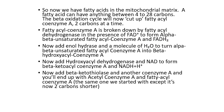Next we add enol hydrase and a molecule of water to our alpha-beta unsaturated fatty acyl coenzyme A, and we turn it into beta hydroxy acyl coenzyme A. Then we add hydroxy acyl dehydrogenase - again a dehydrogenase, so we're harvesting hydrogens from our beta hydroxy acyl coenzyme A. Our coenzyme in this case is NAD, and we form beta keto acyl coenzyme A, releasing NADH plus H+, which goes off to the electron transport chain.